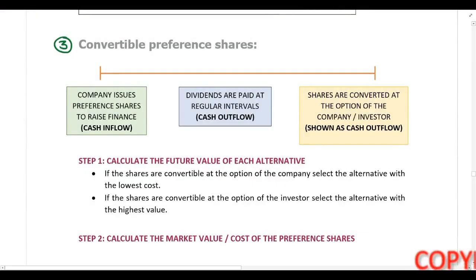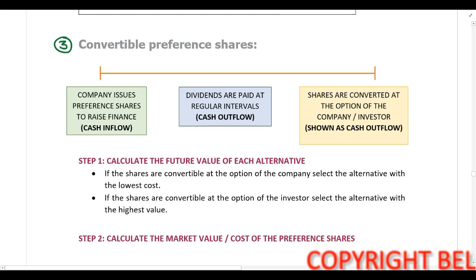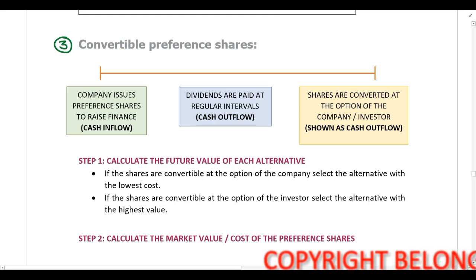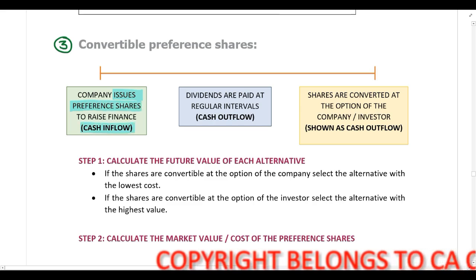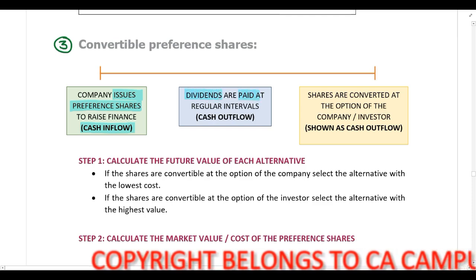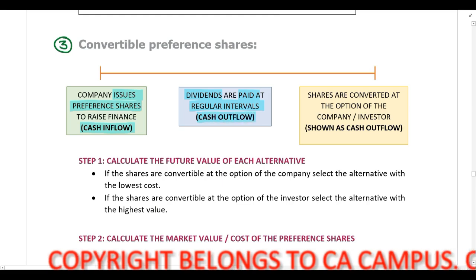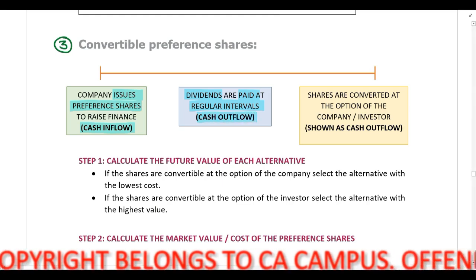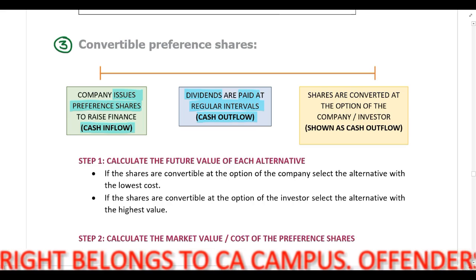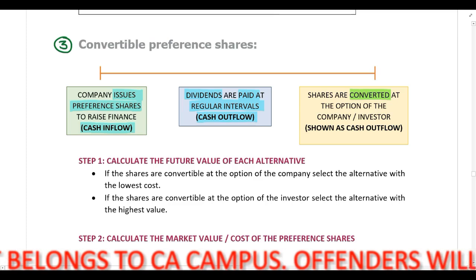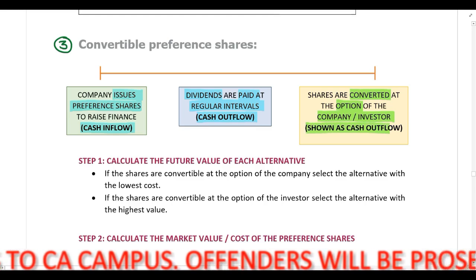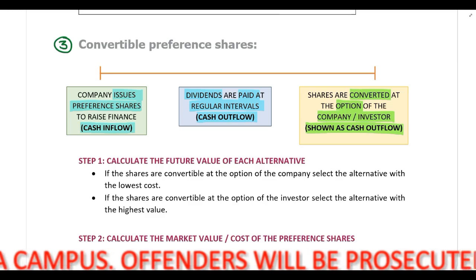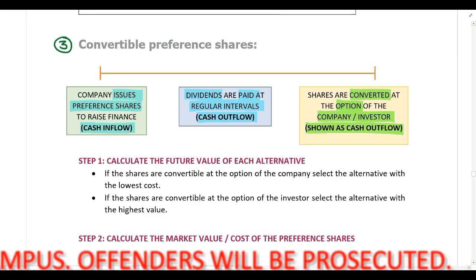We need to look at the calculation for convertible preferences. With convertible preferences, the company needs to raise money, so they issue the preferences — that's a cash inflow. Dividends are paid at regular intervals, which is a cash outflow for the company. After a certain period of time, the preferences are going to convert, either at the option of the company or the investor, and we show this as a cash outflow in our calculations.